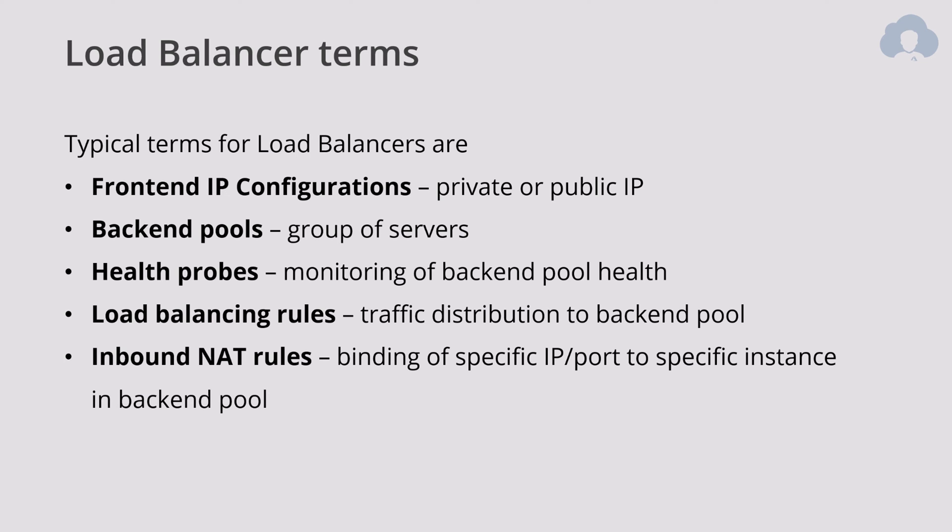Inbound NAT rules allow you to bind a specific incoming IP and port to a specific instance of your server within the backend pool. A classic load balancing rule will always redirect to any server within the backend pool, but with NAT rules you can specify a specific instance of a server. Lastly, you also have outbound rules, so you can control the outgoing traffic as well.